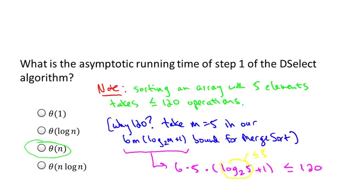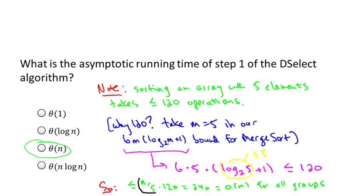So it's constant time to sort just one group of five. We have to do a bunch of groups, but there's only a linear number of them — constant per each — so that's linear time overall. To be really pedantic: 120 operations per group times n/5 groups gives 24n operations to do all the sorting, which is obviously O(n). So linear time for step one.